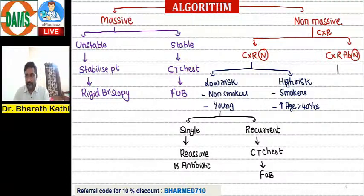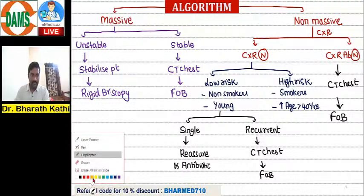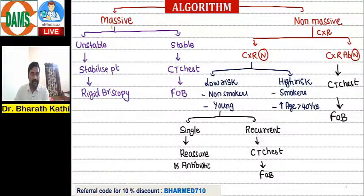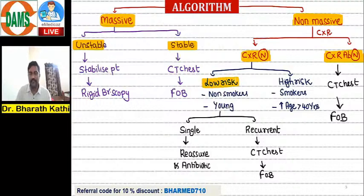If the chest X-ray is abnormal, according to new guidelines go for CT chest followed by fiber optic bronchoscopy. So the key algorithm steps are: massive or non-massive; if massive — stable or unstable; chest X-ray normal or abnormal; if normal — low risk or high risk for malignancy.